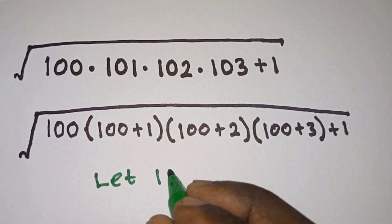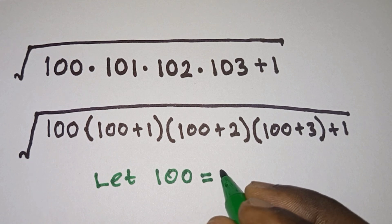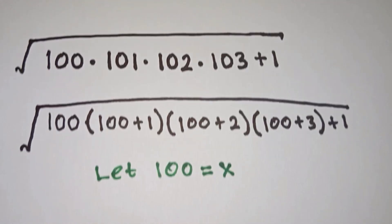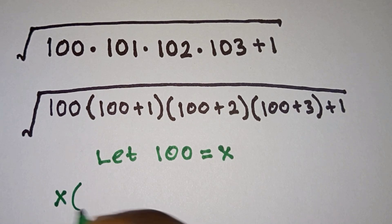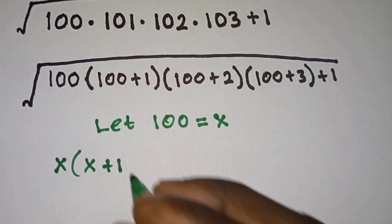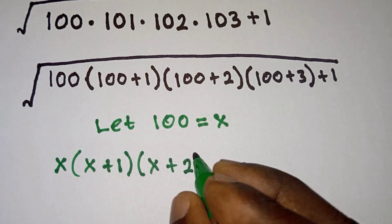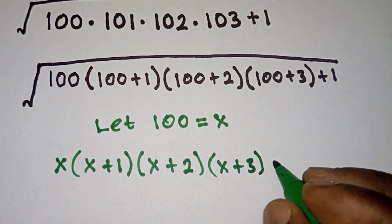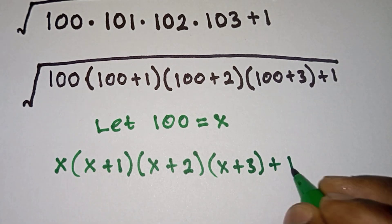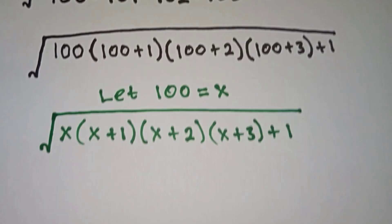From here we're going to let 100 equal to x, so that we can simply solve it using algebra. So from here we're going to have x times x plus 1, times x plus 2 times x plus 3, plus 1, then we have the square root over there.